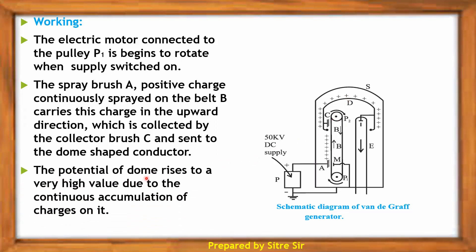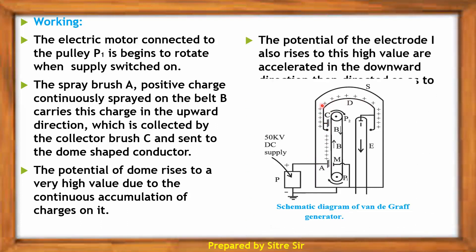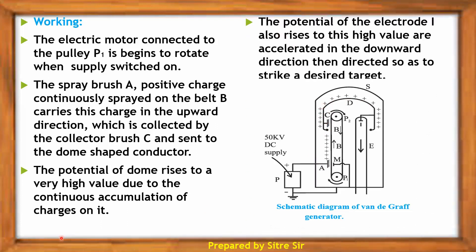The potential of the dome rises to a very high value due to the continuous accumulation of charges on it. The potential of the electrode also rises to this high value, and ions are accelerated in the downward direction and directed so as to strike a desired target.